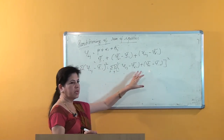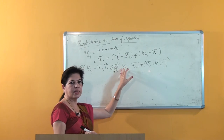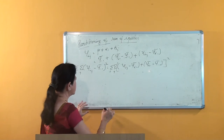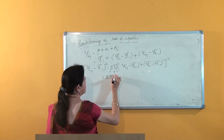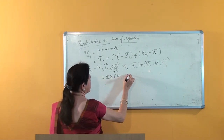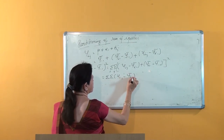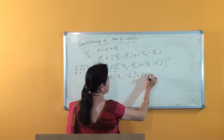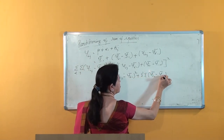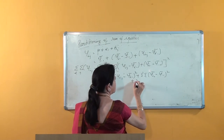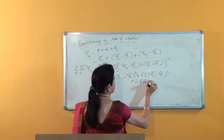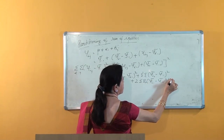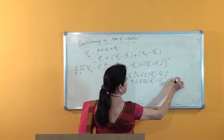This expression is of the form (a + b) squared, which can be expanded as a-squared plus b-squared plus 2ab. So this becomes the double summation of (y_ij minus y_i-dot bar) whole squared, plus double summation of (y_i-dot bar minus y double-dot bar) multiplied by (y_ij minus y_i-dot bar).